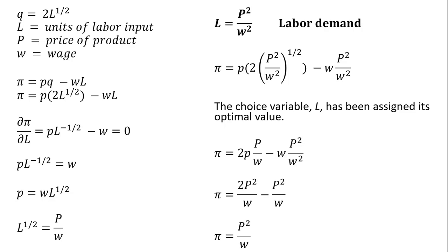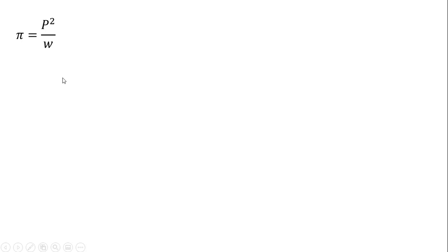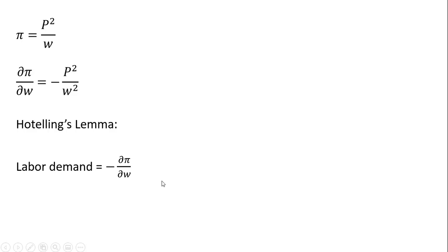Now let's do a few things with this indirect profit function. If we take the partial derivative of the indirect profit function with respect to the wage, we get minus P² / W². Hotelling's Lemma tells us that labor demand equals minus this partial derivative. So this is one way to recover labor demand: take the partial derivative of the indirect profit function with respect to the wage. This is also an application of the envelope theorem.